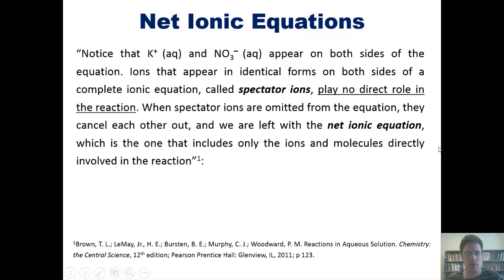Now, notice that K plus and NO3, that is potassium cation and nitrate anion, appear on both sides of the previous equation. Don't believe me? Skip back and look. Ions that appear in identical forms on both sides of a complete ionic equation are called spectator ions and play no direct role in the reaction. When spectator ions are omitted from the equation, they cancel each other out, and we are left with the net ionic equation, which is the one that includes only the ions and molecules directly involved in the reaction. So in this case, this would be the net ionic equation, only the stuff that directly involves any chemical reaction, and doesn't appear the same on both sides. Once again, we see that our solid lead iodide is shown here as a solid.